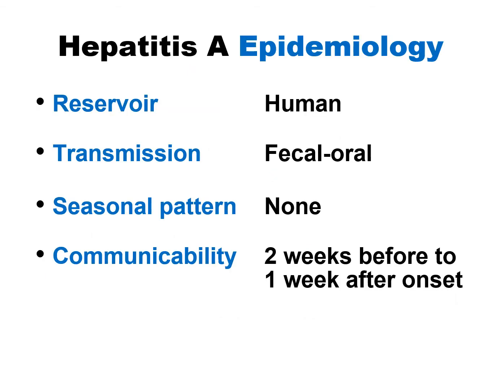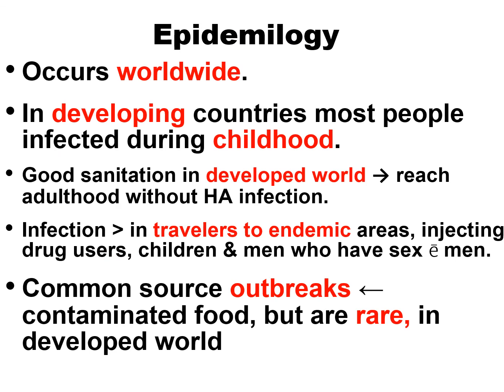Epidemiology of Hepatitis A: Reservoir is human. Transmission: feco-oral. No seasonal pattern. Communicability: two weeks before to one week after onset. Worldwide, in developing countries most people are infected during childhood. Good sanitation in the developed world has led people to reach adulthood without Hepatitis A infection. Infection is more common in travelers to endemic areas, injecting drug users, children, and men who have sex with men.